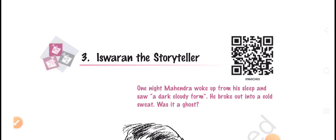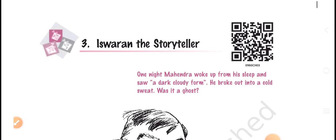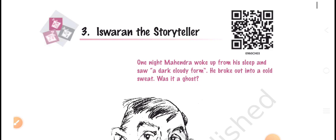In our previous video, we explained Ishwaran's story told to Ganesh by Mahendra, who worked as a junior supervisor at different construction sites. As Mahendra was unmarried, he lived in temporary shelters provided by the construction company. Ishwaran accompanied Mahendra wherever he went and was an asset to him — he provided company, cooked food, and even washed his clothes.